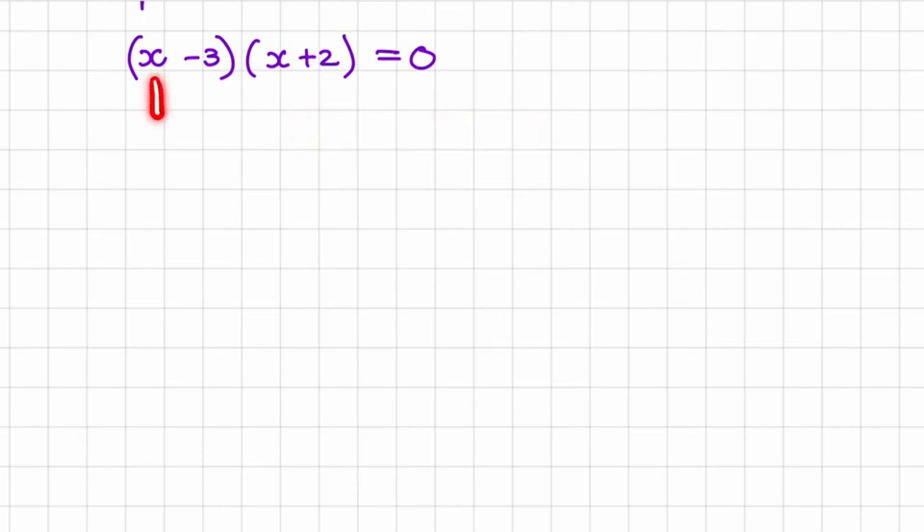So what value can I substitute in the place of x to make the first bracket equal to 0 in order for us to get a result of 0 times a bracket which would be equal to 0?